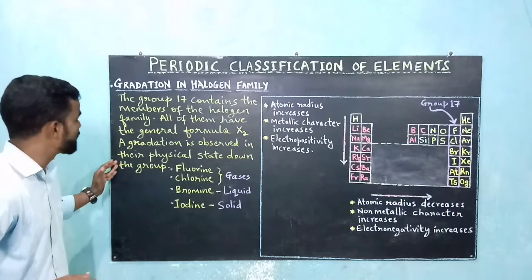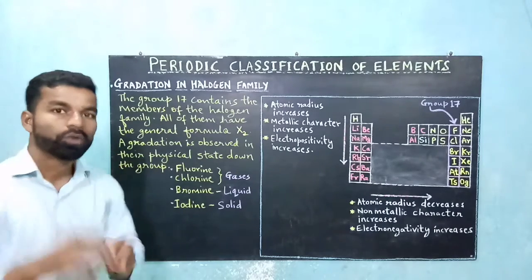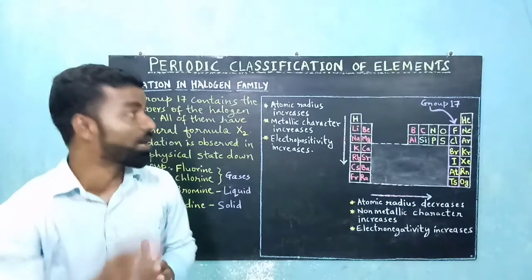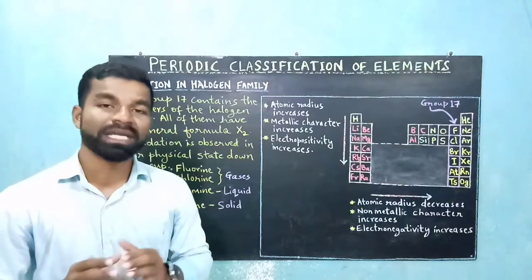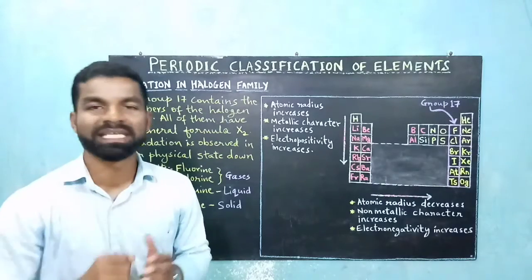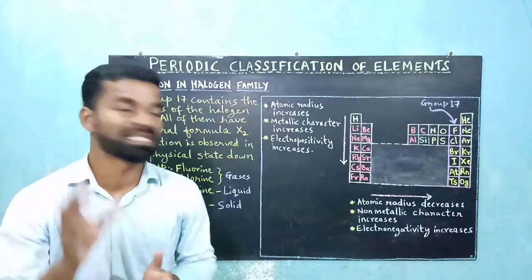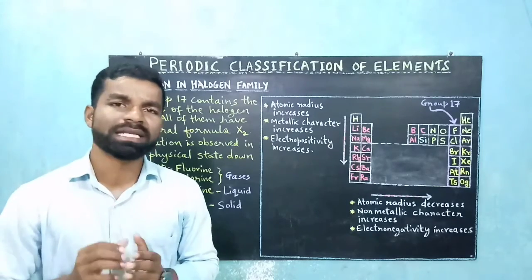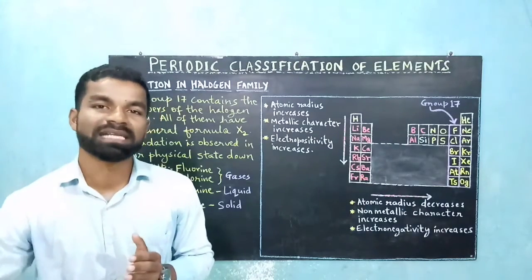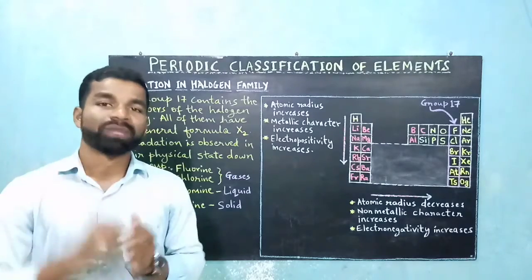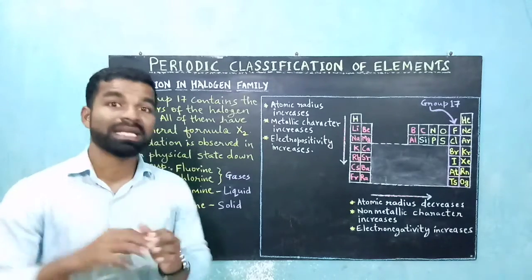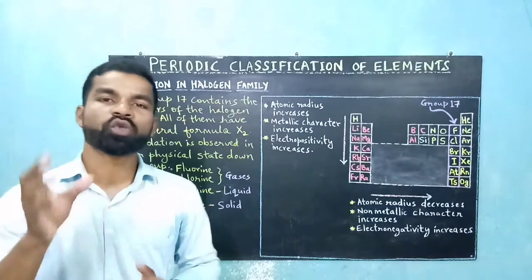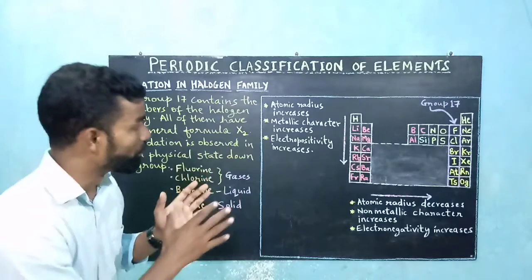A gradation is observed in their physical state down the group. Fluorine and chlorine, the first two elements of this group, are gaseous in state. Then bromine is a liquid and iodine is a solid. So there are changes in their physical states as you go down the group.